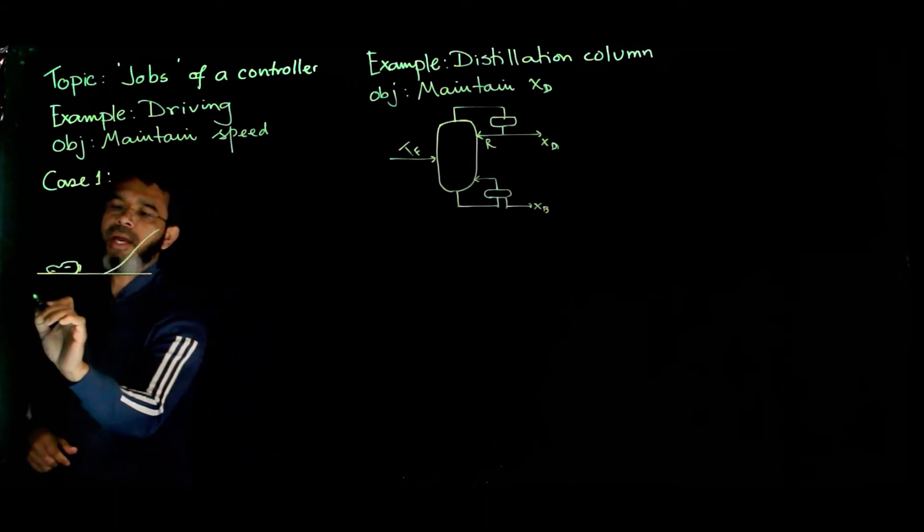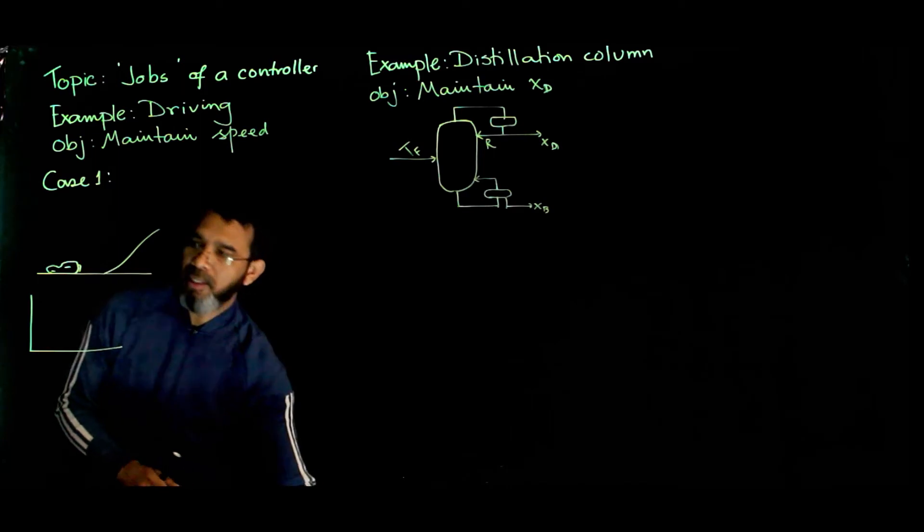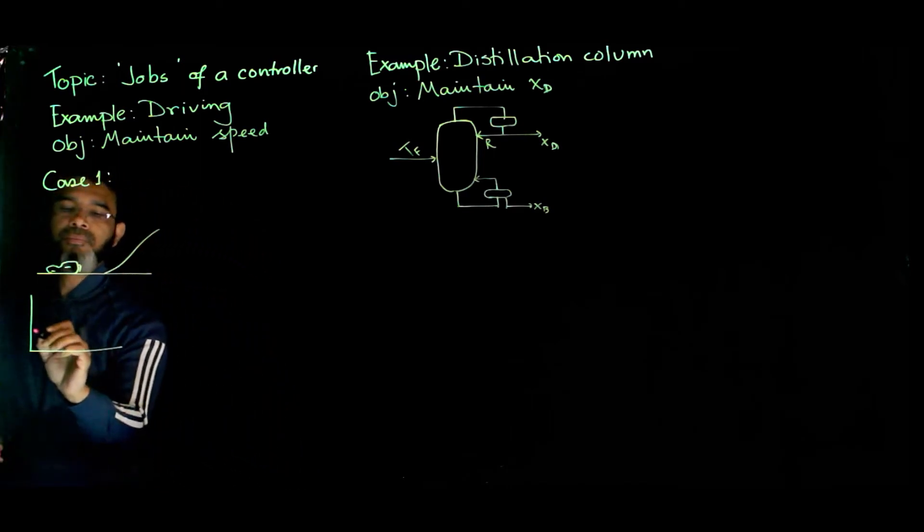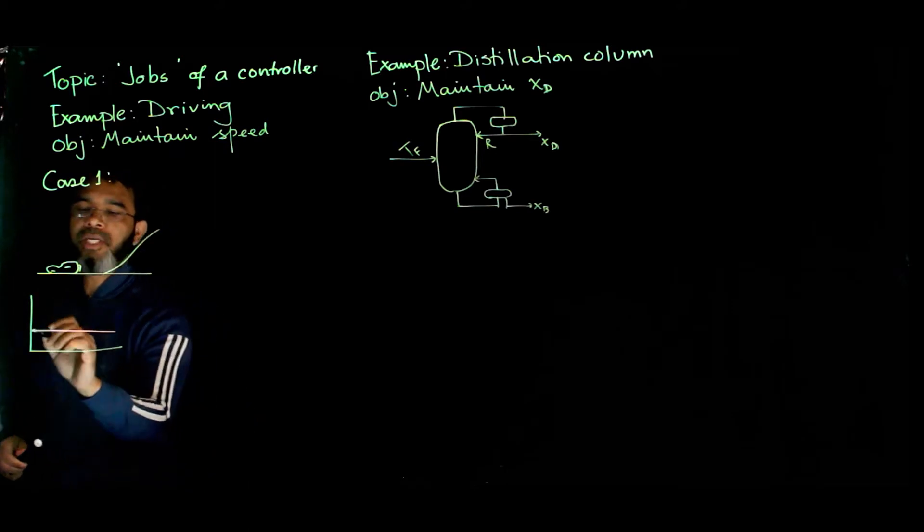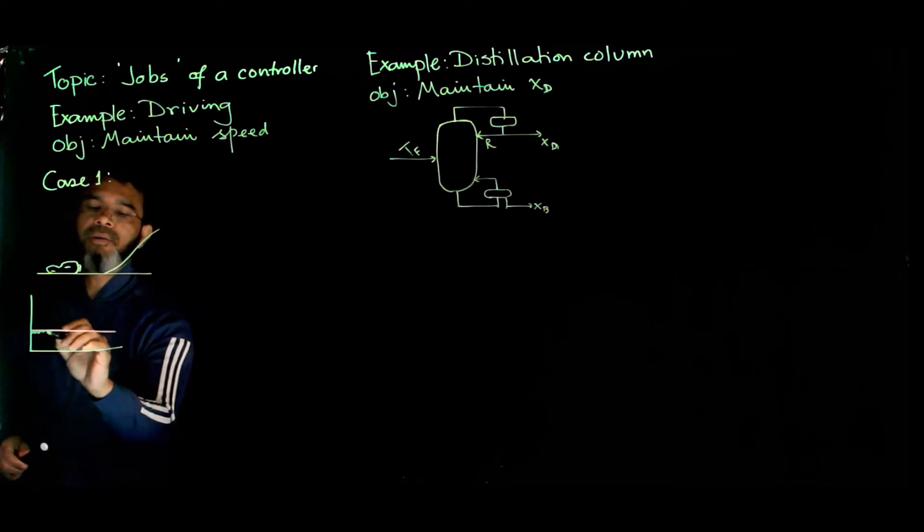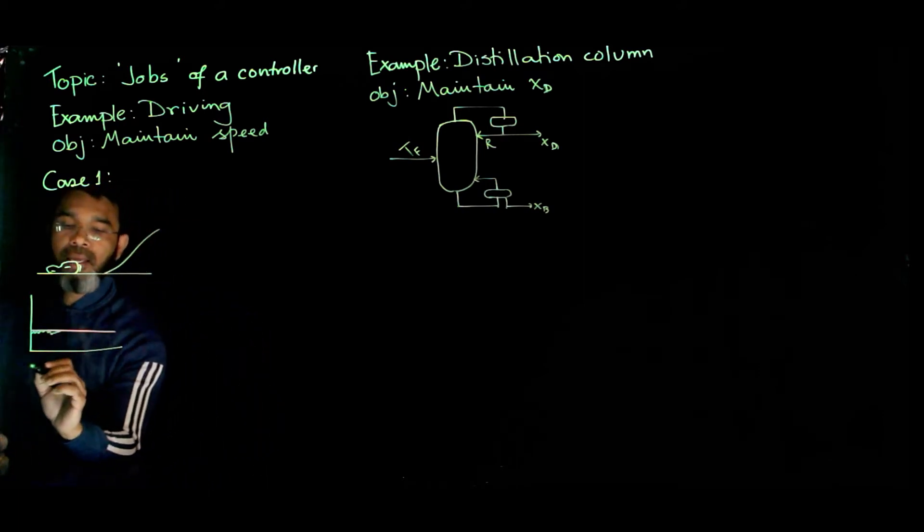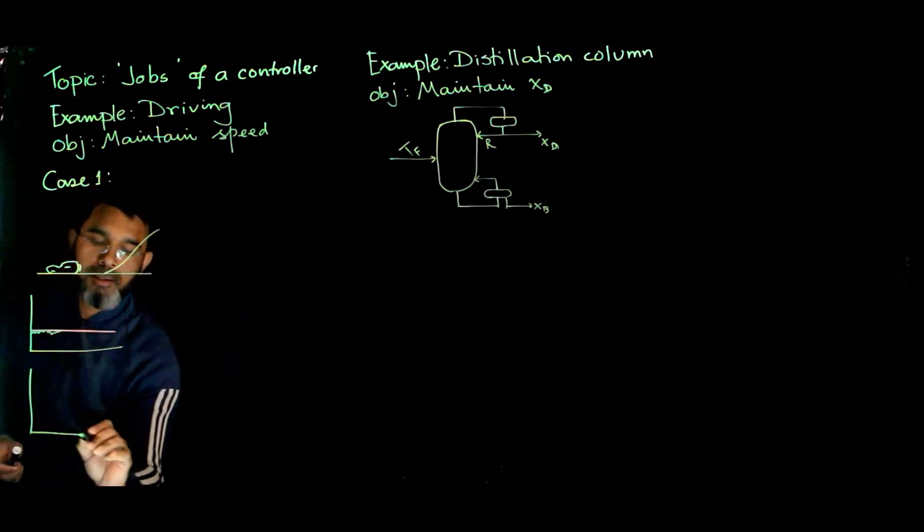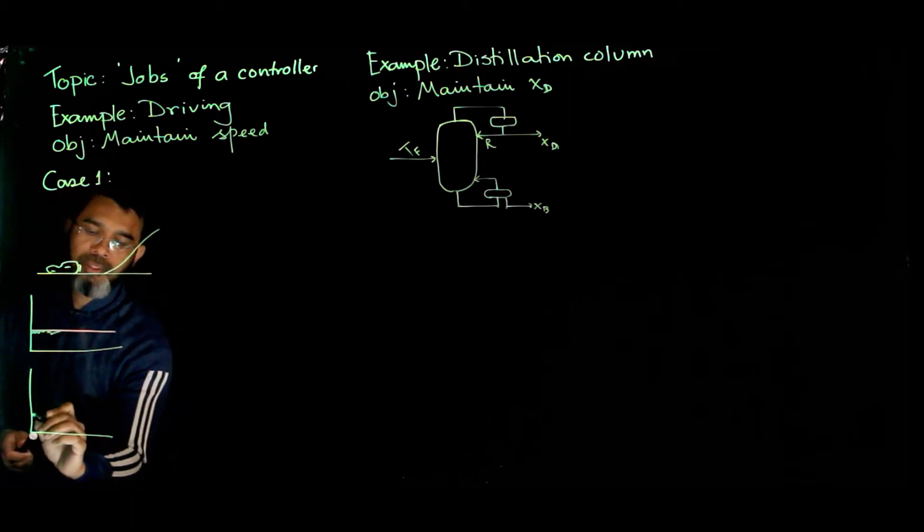In that case, if we have the speed, suppose speed was maintained at this desired set value. So you're maintaining the speed at the desired value with some gas flow.